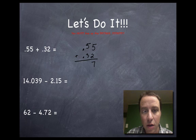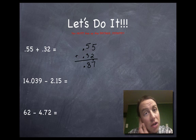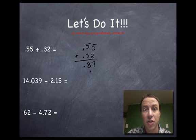Five plus two is seven. Five plus three is eight. Okay, and then let's not forget to drag down our decimal point at the end. So what's 55 hundredths plus 32 hundredths? Well, 87 hundredths or eight tenths and seven hundredths, however you want to look at it.